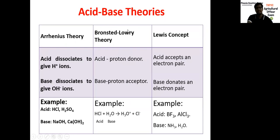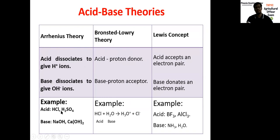Acid-base theories: there are three major types — Arrhenius theory, Bronsted-Lowry theory, and the Lewis concept. In Arrhenius theory, an acid dissociates to give H+ ions. For example, HCl put into water forms H+ and Cl- ions. For a base, it dissociates to give OH- ions — for example, NaOH and calcium hydroxide.